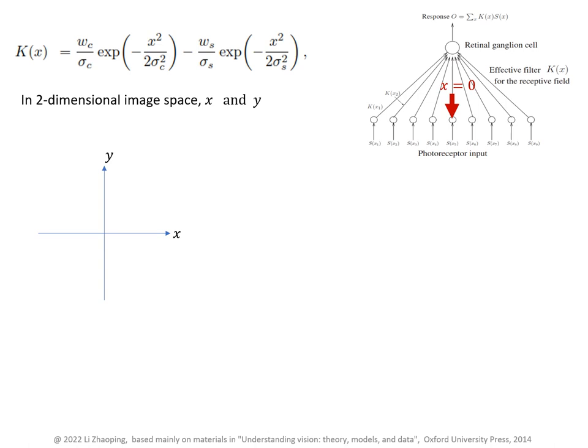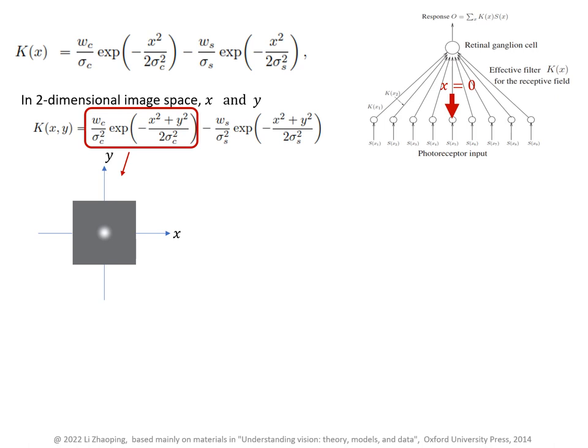In a two-dimensional image space with axis x and y, this receptive field is K as a function of both x and y. So the first Gaussian could look like this in the two-dimensional space. The second Gaussian appears like this. Its center is darker because the second Gaussian has a negative sign in front of it. The first Gaussian has a radius about sigma_c parameterized here, and the second Gaussian has a larger radius sigma_s.